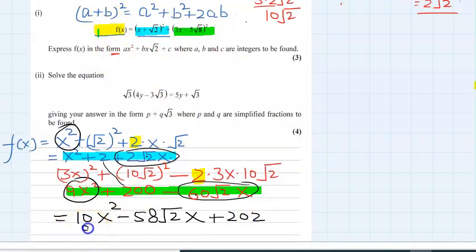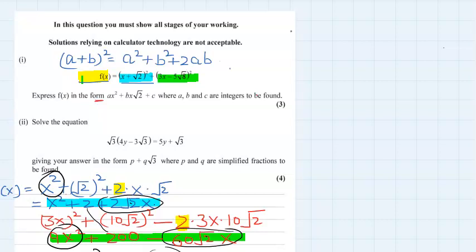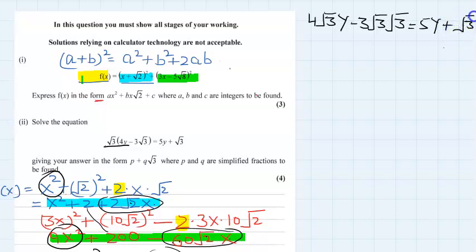You can see a = 10, b = -58 (with x√2), and c = 202. Now the second part is to solve the equation: 4√3·y - 3√3 = 5y + √3. This is a linear equation, not a quadratic equation, so we put y on one side. We have two y terms: 4√3·y and 5y.